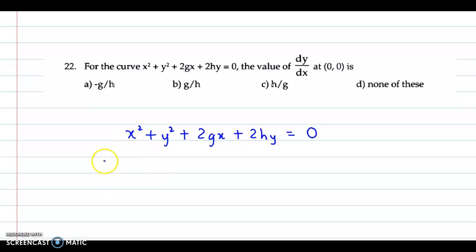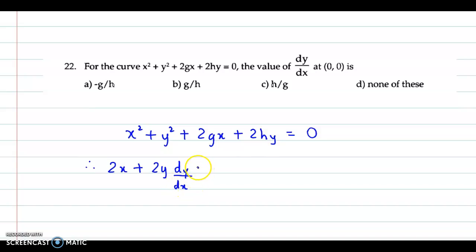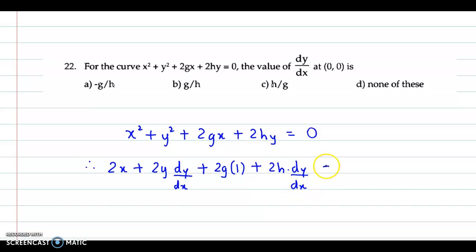We get the derivative of x squared is 2x, derivative of y squared is 2y dy by dx, plus derivative of 2gx so 2g remains as it is, derivative of x is 1, plus 2h times dy by dx is equal to 0.